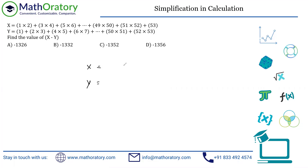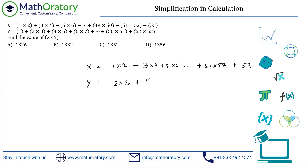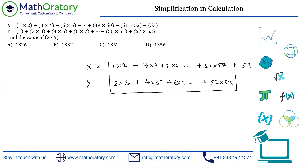For x, we have 1×2, then 3×4, then 5×6, going on till 51×52, plus that extra 53. For y, starting with 2×3, then 4×5, then 6×7, going on till 52×53, plus the 1 at the end. Before proceeding, always make sure you have the same number of terms in both expressions — confirm whether there's an equal number of terms.